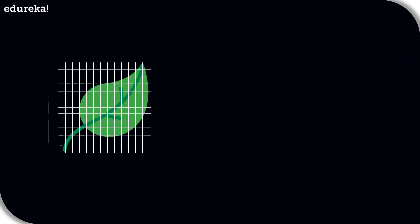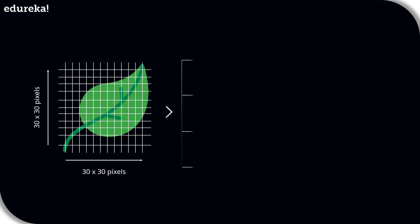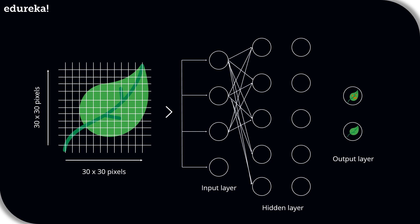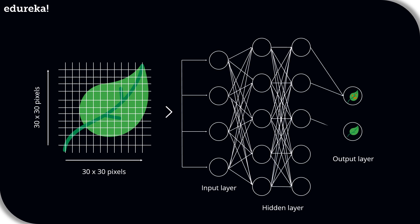For example, if the image is composed of 30 by 30 pixels, then the total number of pixels will be 900. These pixels are represented as matrices, which are then fed into the input layer of the neural network. Just like how our brains have neurons that help in building and connecting thoughts, an artificial neural network has perceptrons that accept inputs and process them by passing them on from the input layer to the hidden and finally the output layer.